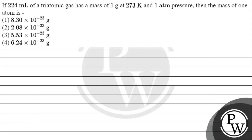Let's read this question. If 224 ml of triatomic gas has a mass of one gram at 273 kelvin and one atm pressure, then the mass of one atom is: option 1 - 8.30 × 10⁻²³ gram, option 2 - 2.08 × 10⁻²³ gram, option 3 - 5.53 × 10⁻²³ gram, or option 4 - 6.24 × 10⁻²³ gram. The key concept for this question is the ideal gas equation.